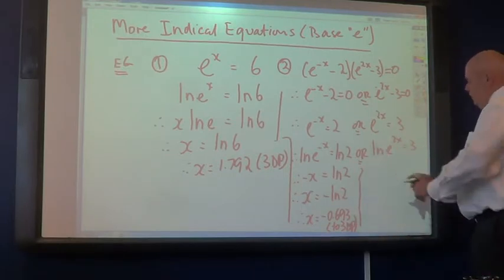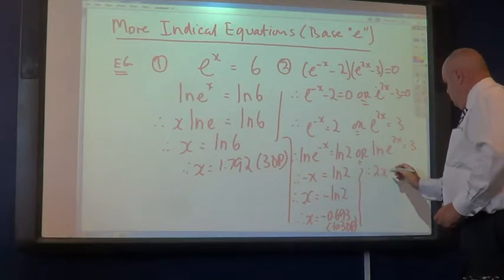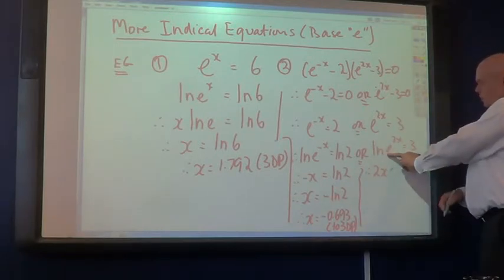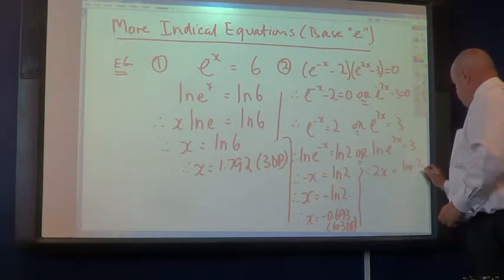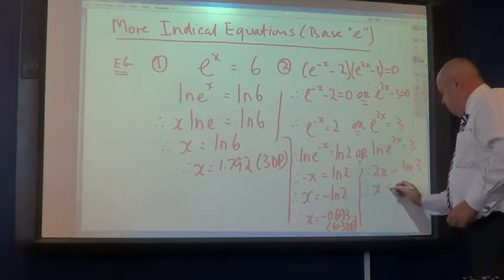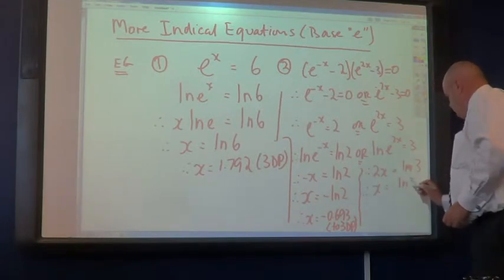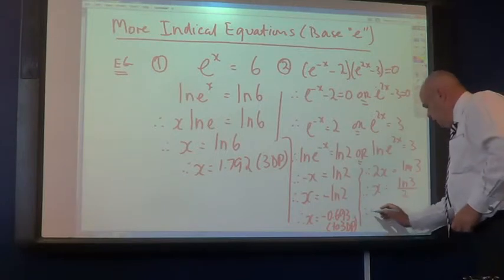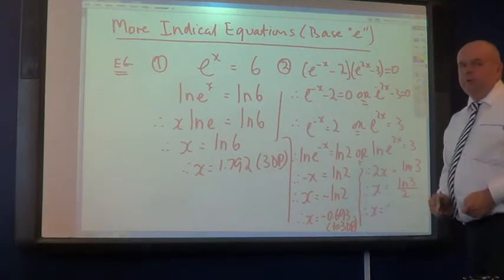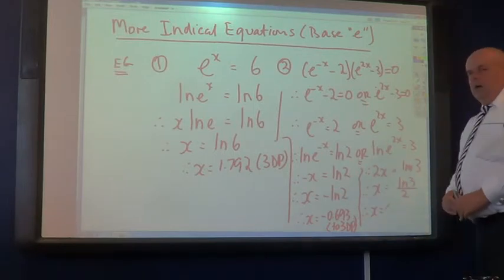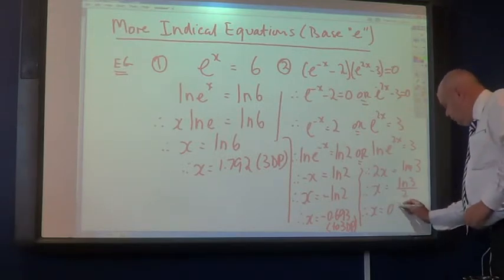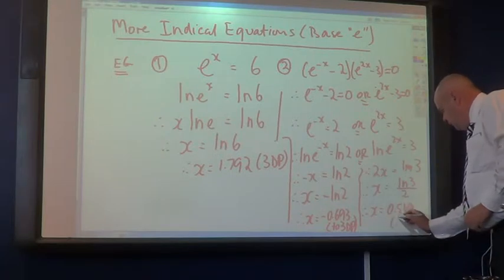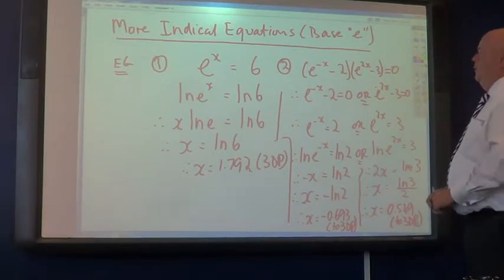And now, similar logic here. 2x out front. Ln E, we've seen before, is equal to 1. So let's ignore that. Equals ln 3. Therefore, x equals ln 3 over 2. And if you want a numeric approximation to repeat the point. Sometimes we don't. We're happy for it to be in exact form. That would come to 0.549, again, 3 decimal places. I hope your rounding's okay there. Good job.